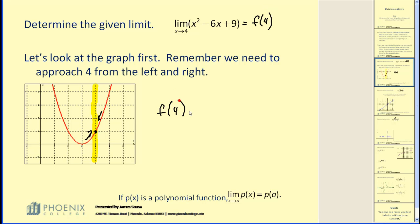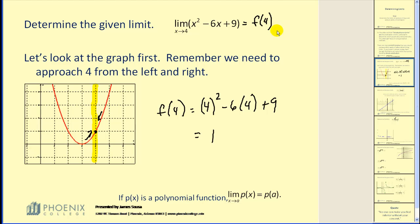If we calculate f of 4, we'll obtain the value of positive 1 as we see on the graph. f of 4 is equal to 4 squared minus 6 times 4 plus 9, which is equal to positive 1, which also gives us the value of this limit. Visually we can see the y value of this point is equal to positive 1. In fact, if p of x is a polynomial function, the limit of p of x as x approaches a is equal to p of a.